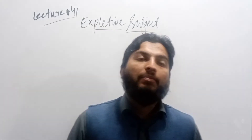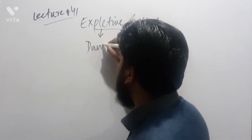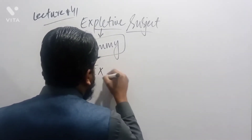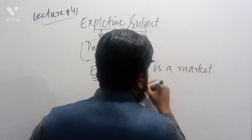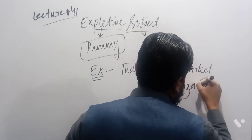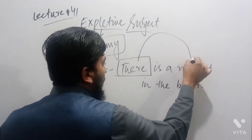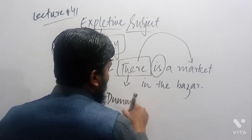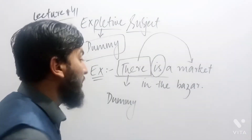It is called dummy subject because it does not take any part in the sentence. For example, if I say 'There is a market in the bazaar' — here the word 'there' is called the dummy subject because it does not take any real part. It is used as subject only to show the existence of the market present there in the bazaar.